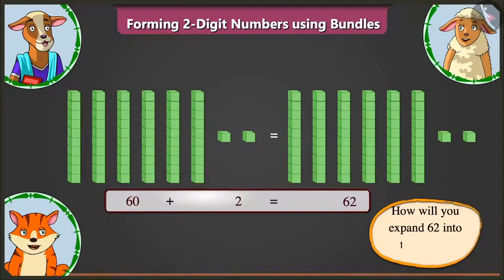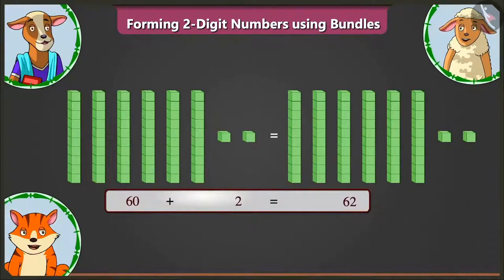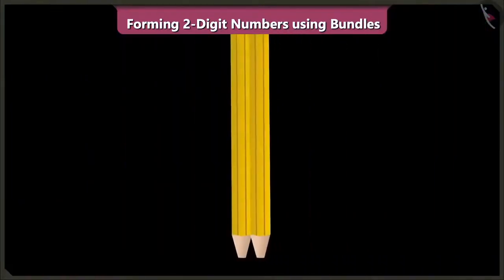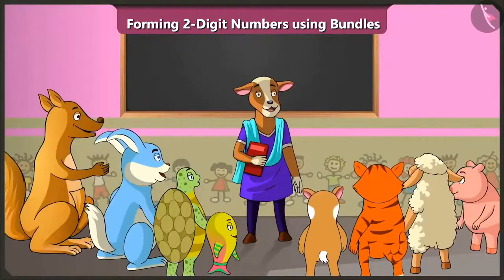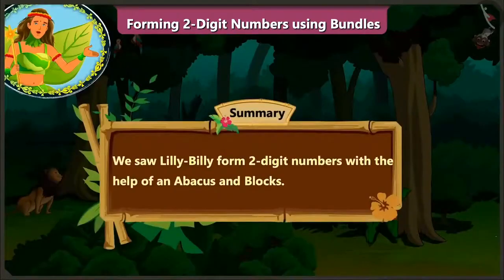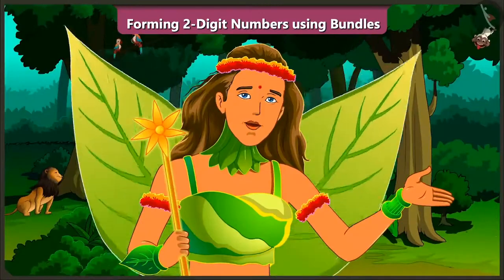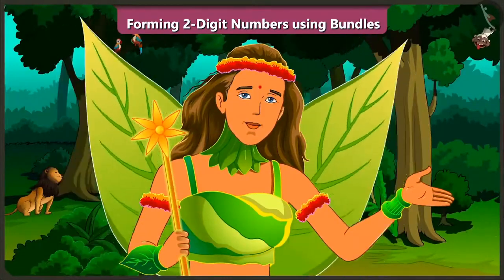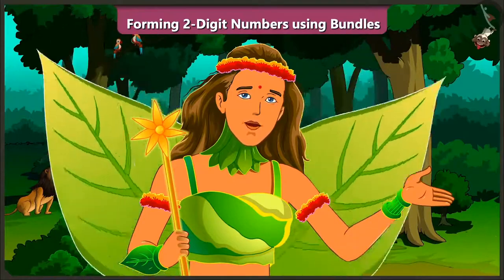Now, how will you expand sixty-two into two parts? Sixty-two means six tens and two ones — that means the two parts will be sixty and two. Absolutely right, Billy. Children, you saw Lily and Billy form two-digit numbers with the help of abacus and blocks. In the next video, we will understand some interesting facts about forming two-digit numbers with the help of bundles of tens.